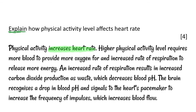Higher physical activity level requires more blood to provide more oxygen, for an increased rate of respiration to release more energy. An increased rate of respiration results in increased carbon dioxide production as waste, and this will result in a decrease in blood pH. The brain will recognize this drop in blood pH, and it signals to the heart's pacemaker to increase the frequency of impulses, which increases the blood flow.